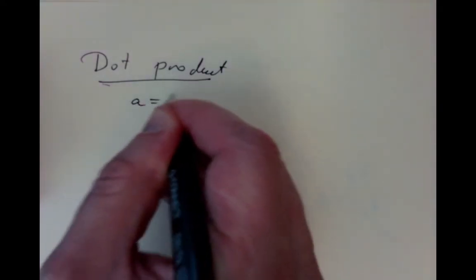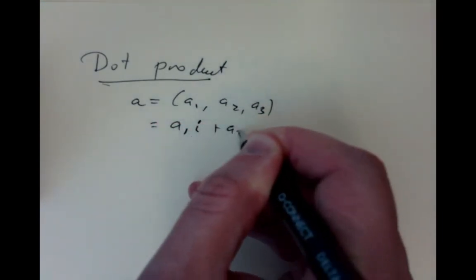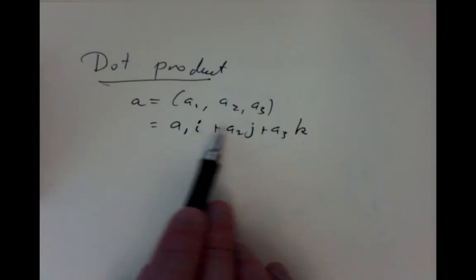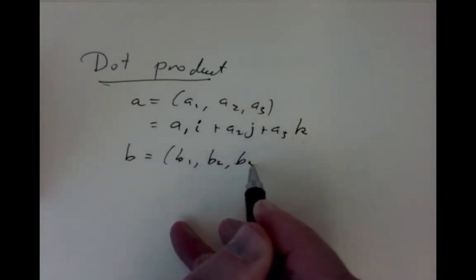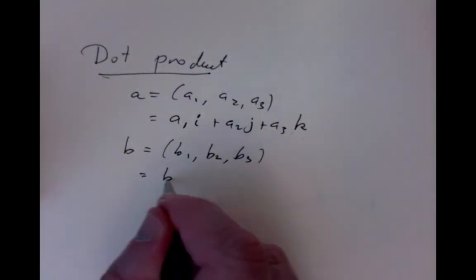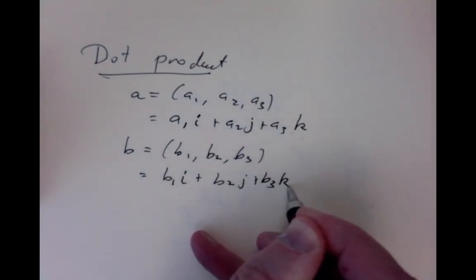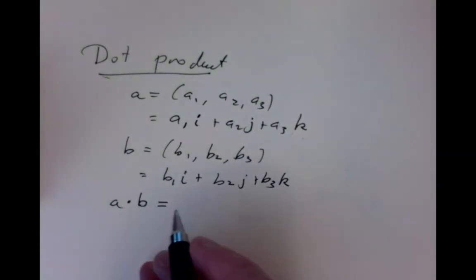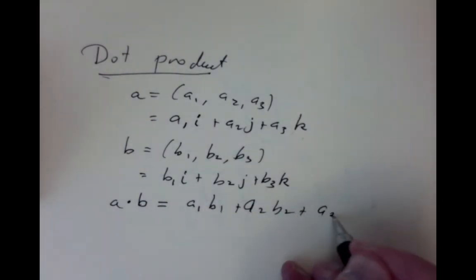The dot product: if we write vector a as having components (a1, a2, a3) — which we can also write as a1·i + a2·j + a3·k — and vector b as (b1, b2, b3), then a dot b is simply defined as a1·b1 + a2·b2 + a3·b3. You multiply the corresponding components and add them up.